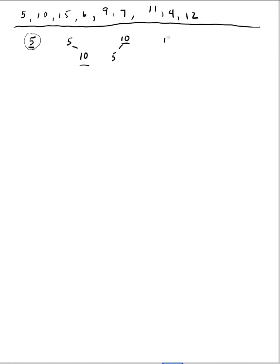Now I'm going to insert a 15. 15 is greater than 10, and my new node is the child of the root, so I just do a single rotation around that link, and I have 15, 10, 5 — where the 15 is now up at the root level.